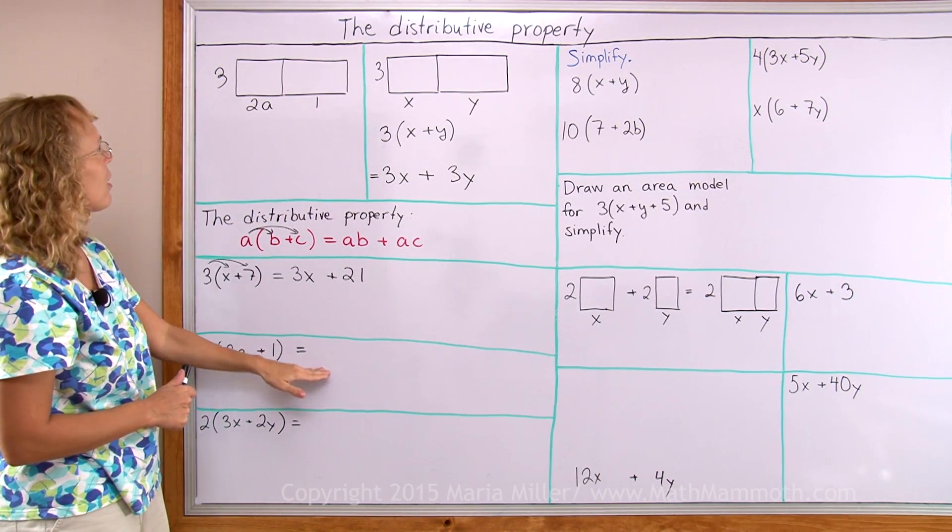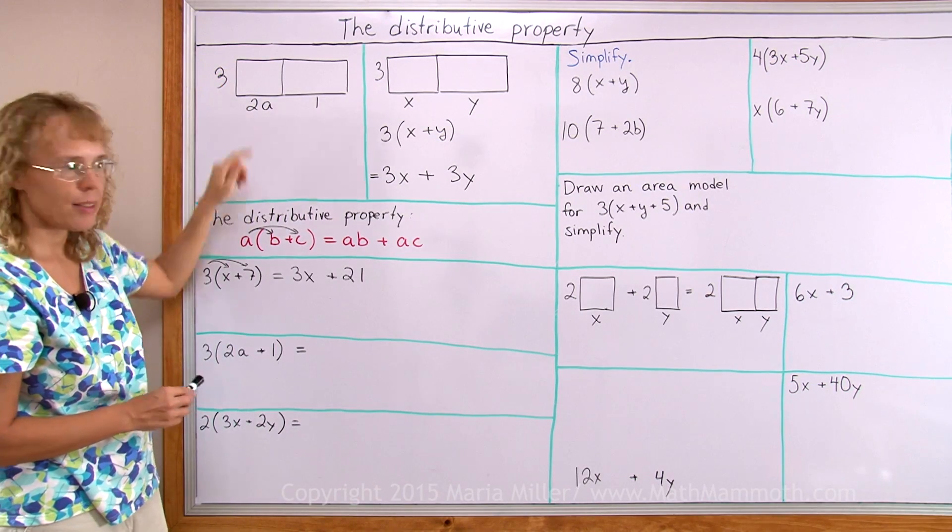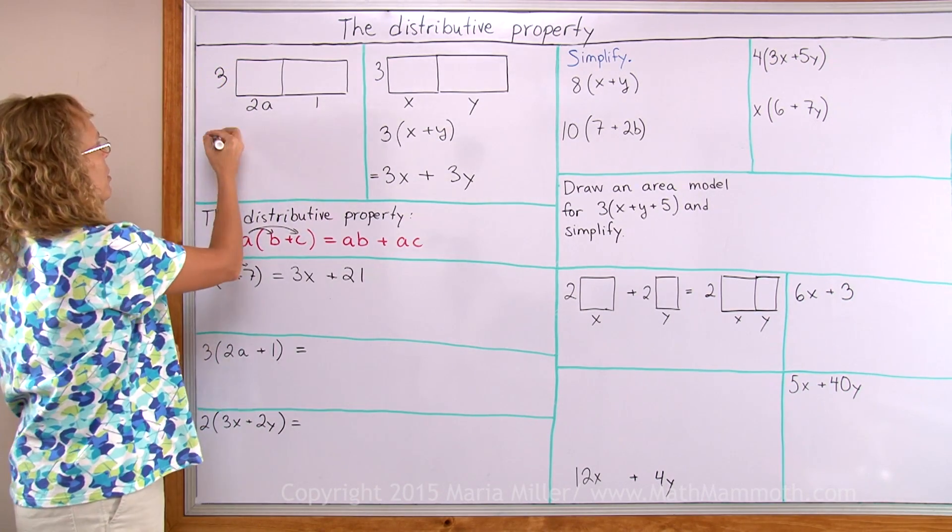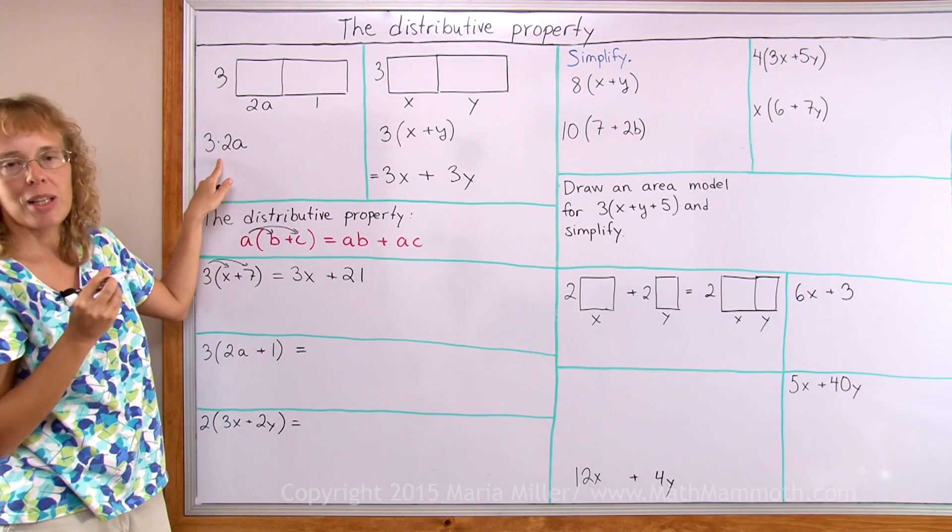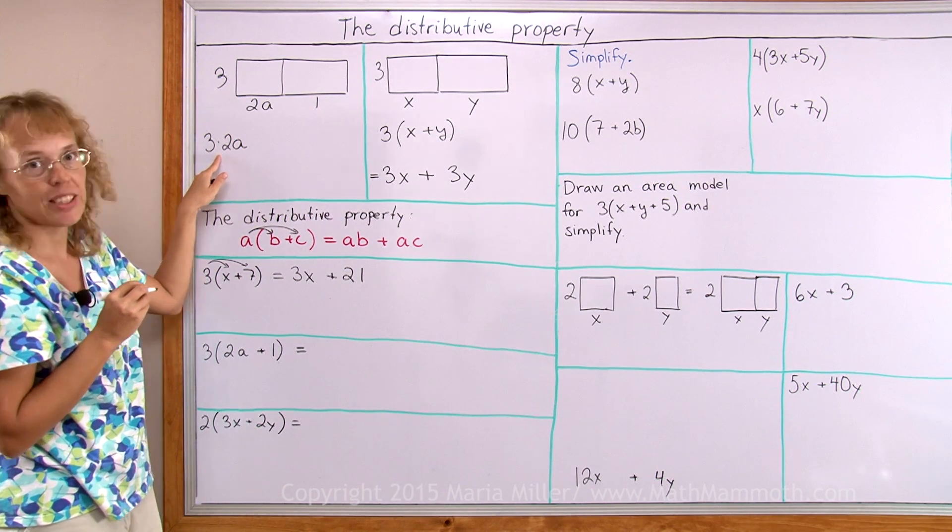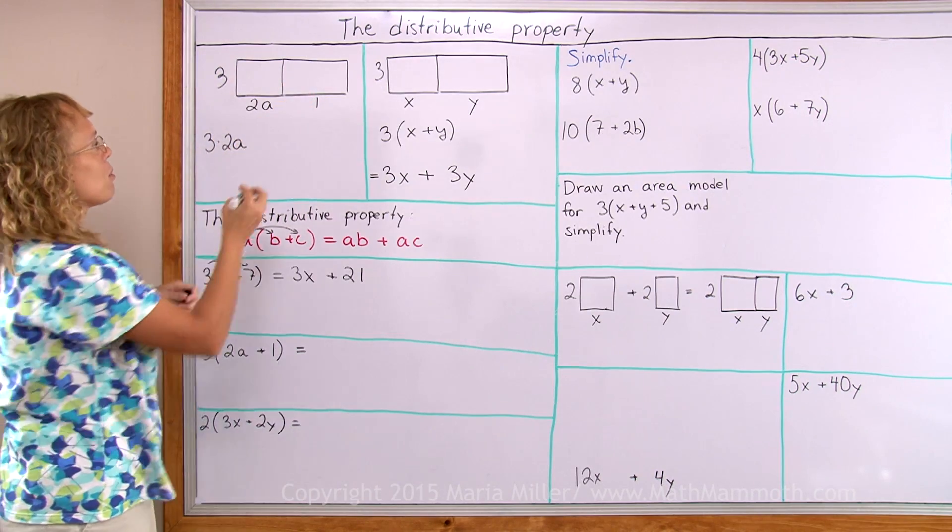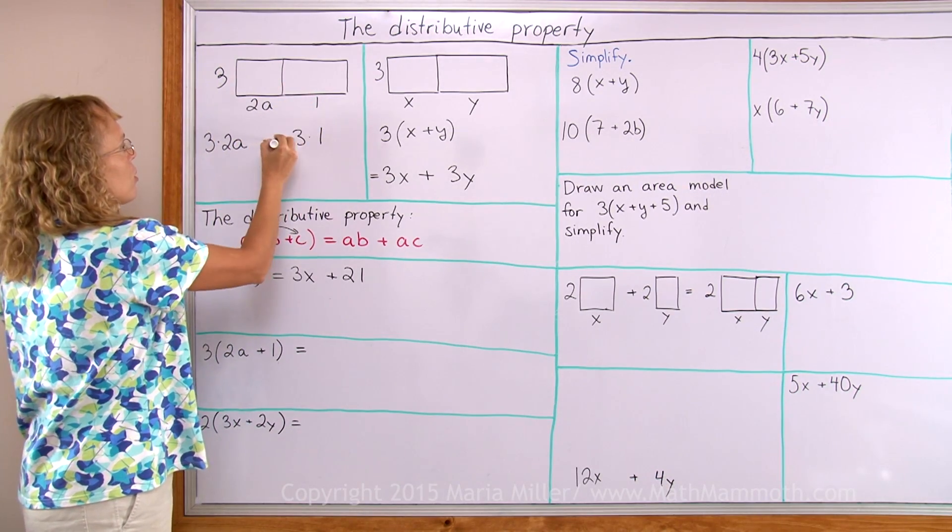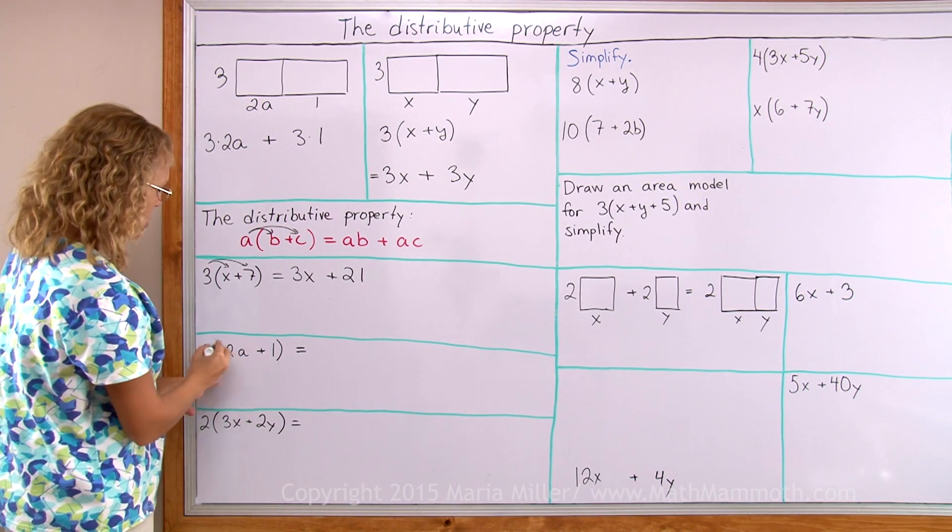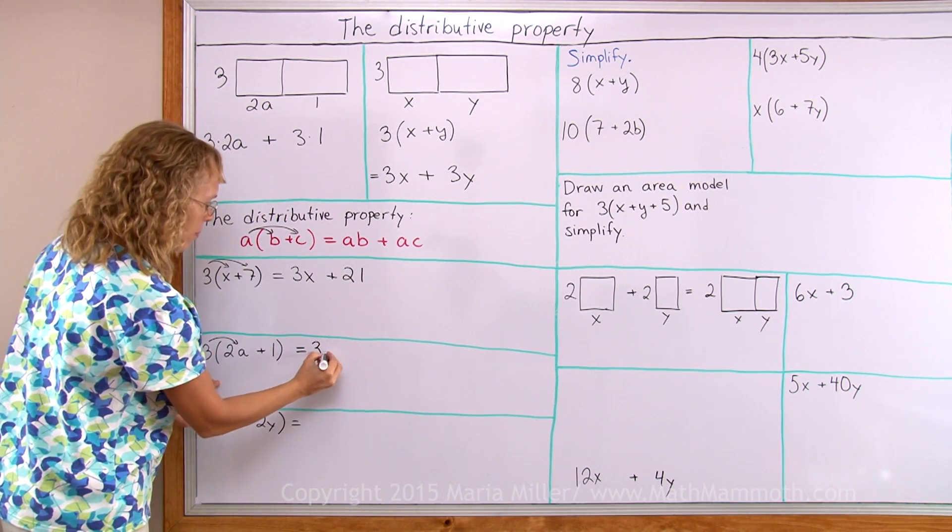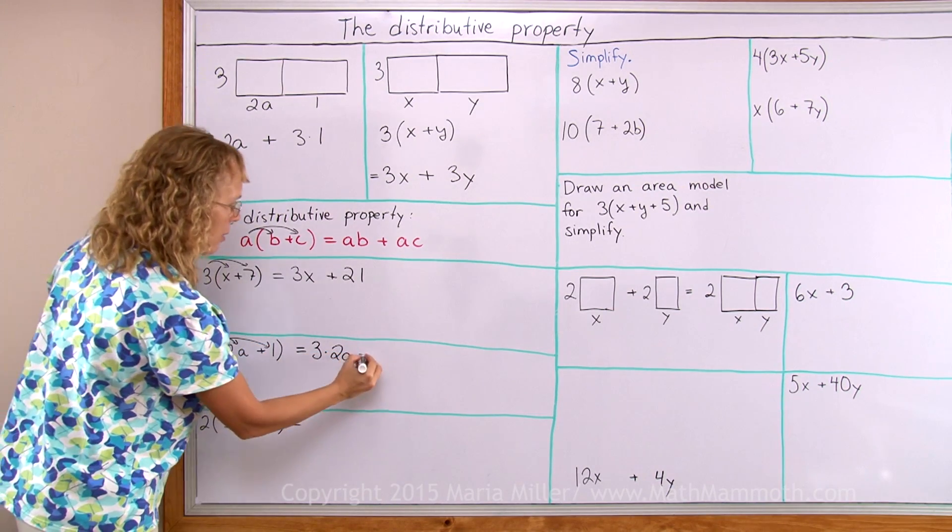And if we are simplifying this then the first rectangle here has the area of 3 times 2a. We would have 3 times 2a. Now I have to put the multiplication symbol here between 3 and 2 so I won't get 32. And then the area of this is 3 times 1. Those are added. And I'll copy it here too. 3 times 2a and then 3 times 1 and they are added.